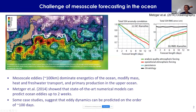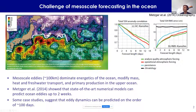What are ocean mesoscales? This is a picture of the Kuroshio Current — you can see the swirls. It's very similar to the Gulf Stream. These features are about 100 kilometers across and they essentially dominate the energetics of the ocean, modify mass heat and freshwater transport, primary production, and gas exchange in the upper ocean.